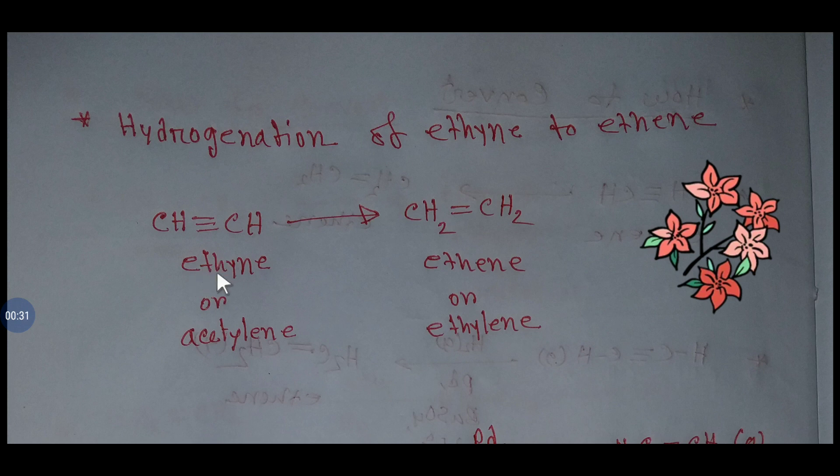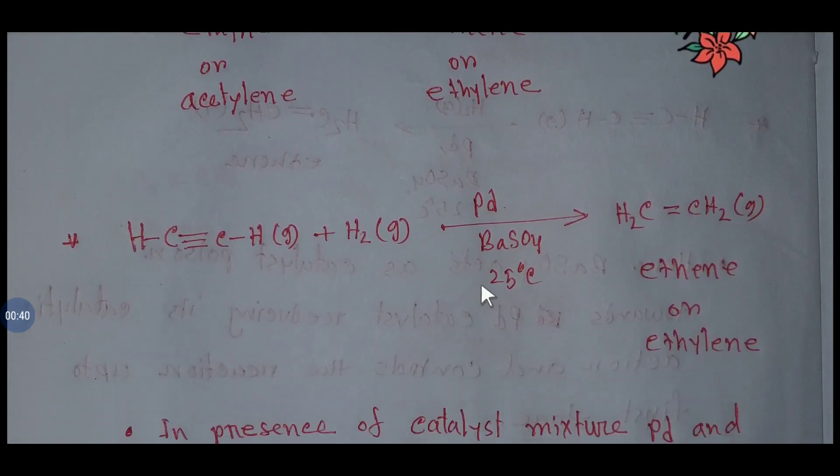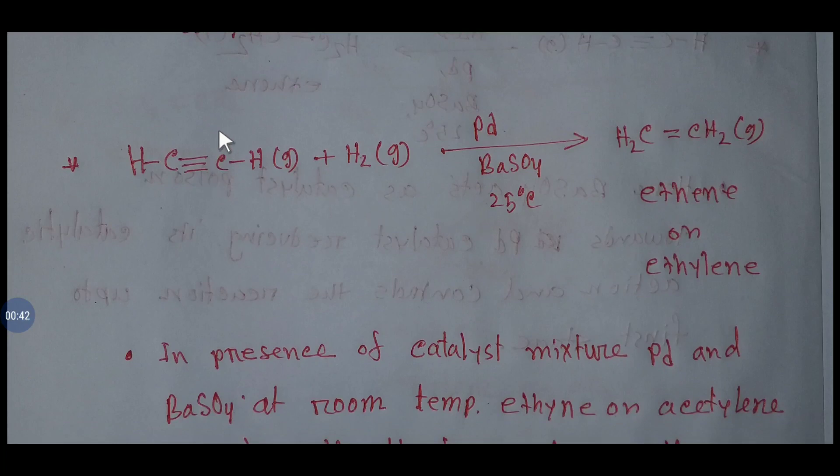The alternative name of ethyne is acetylene and the alternative name of ethene is ethylene. Well, this is ethyne, ethylene.